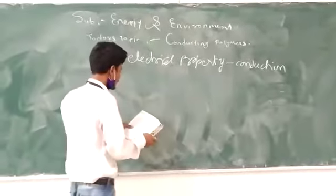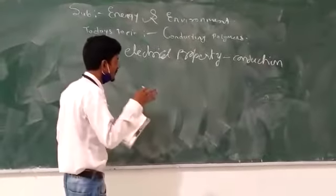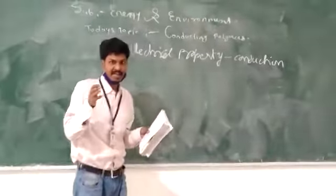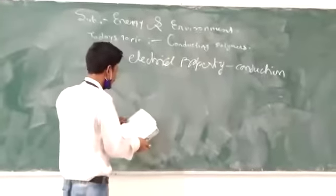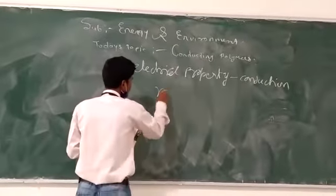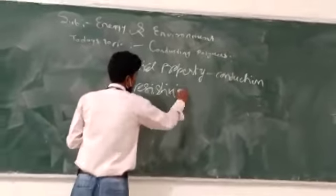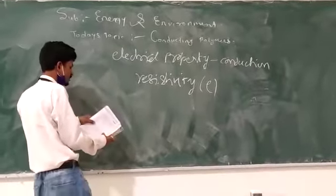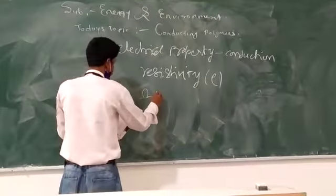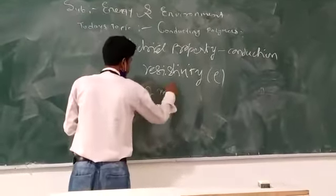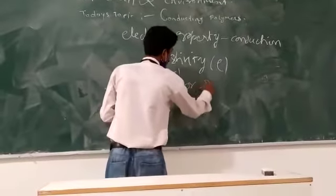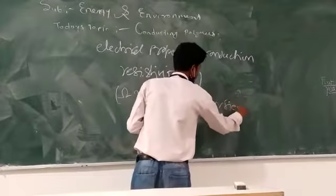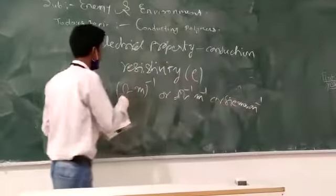These electrons are responsible for the conductivity property. The conductivity unit is siemens per meter. Conductivity is the opposite of resistivity.